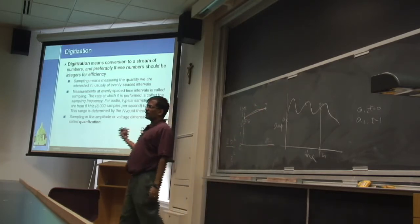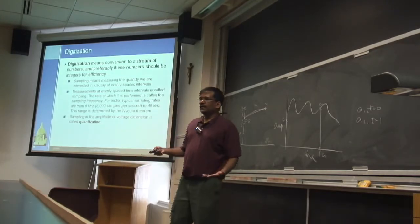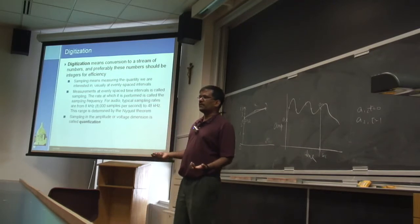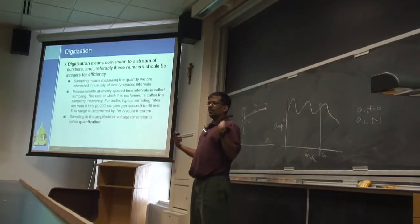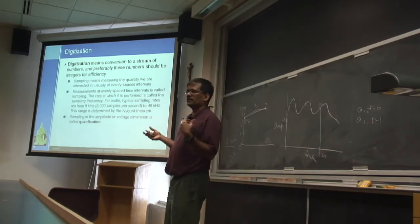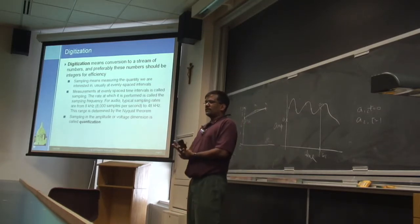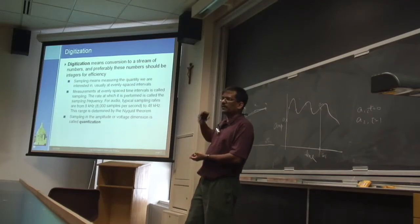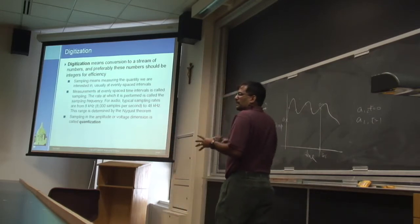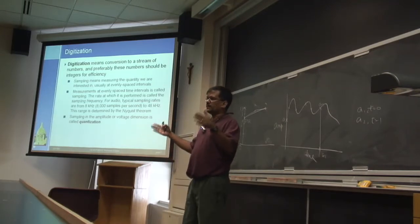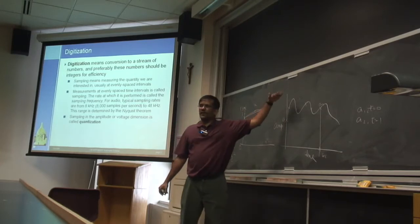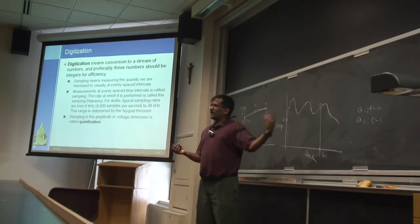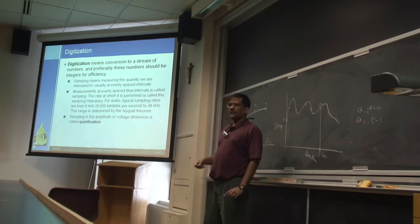You may have seen this in different contexts when you buy digital audio. If you've bought or downloaded MP3s, one of the parameters you notice is bitrate. Bitrate essentially boils down to this: the number of quantization levels times the number of samples per second. If you create one million bits of data per second, your data rate is one megabit per second.